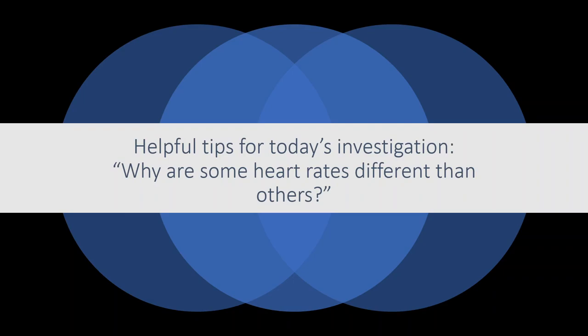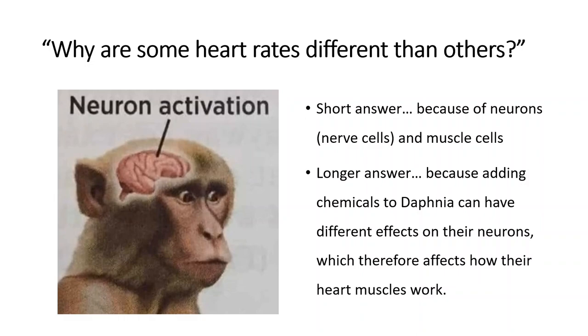The question we investigated would be, why are some heart rates different than others? I feel like that is kind of a vague question, but the short answer to it is because of neurons, which are nerve cells, as well as muscle cells. A bit of a longer explanation is because adding chemicals to Daphnia can have different effects on the neurons, which therefore will affect how their heart muscles work.